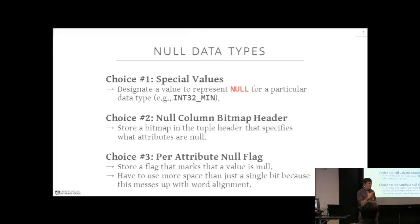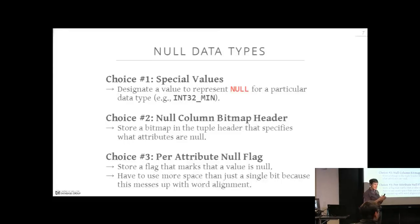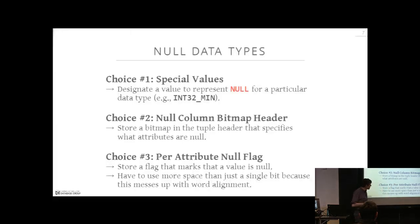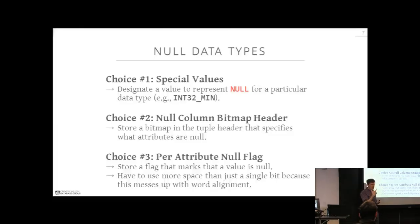The second and probably most common approach is maintaining a bitmap or bit-vector in the tuple header, where each bit indicates whether a particular attribute is null. If you have 10 attributes, you have a 10-bit array in the header and flip bits on and off. This is what Oracle Times Ten does, what Hekaton does, and what SQL Server does. The downside is you must check the bitmap as you access the tuple, and wide tuples require a long bitmap.